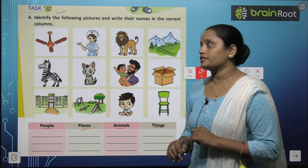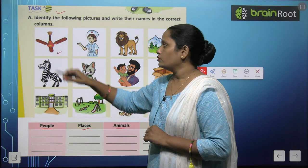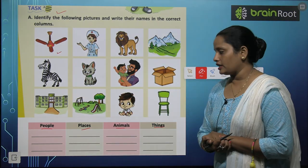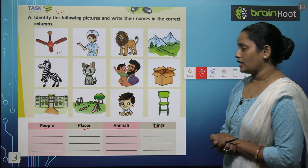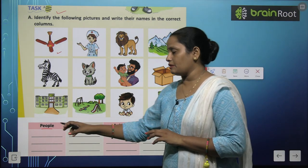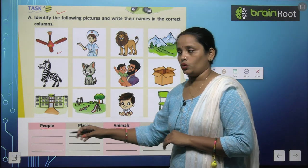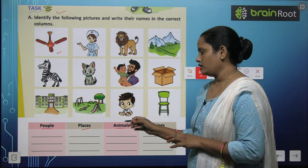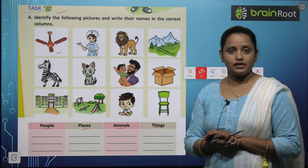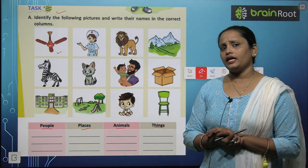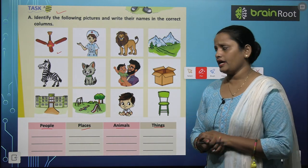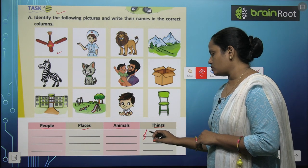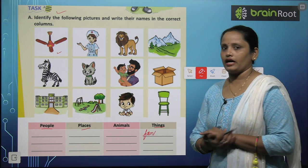First picture is of a fan — sab ke gharon mein hota hai na. Toh fan kya hai? Kya yeh koi person hai? No. Place? No. Animal? No. Kya yeh ek thing hai? Yes. So let's write here — fan.